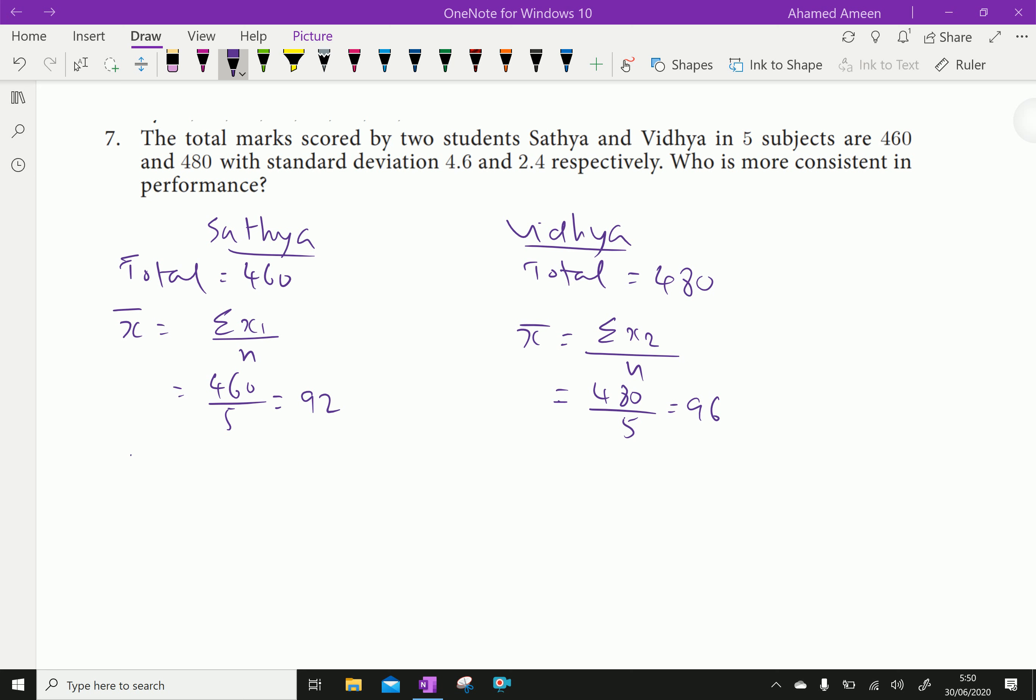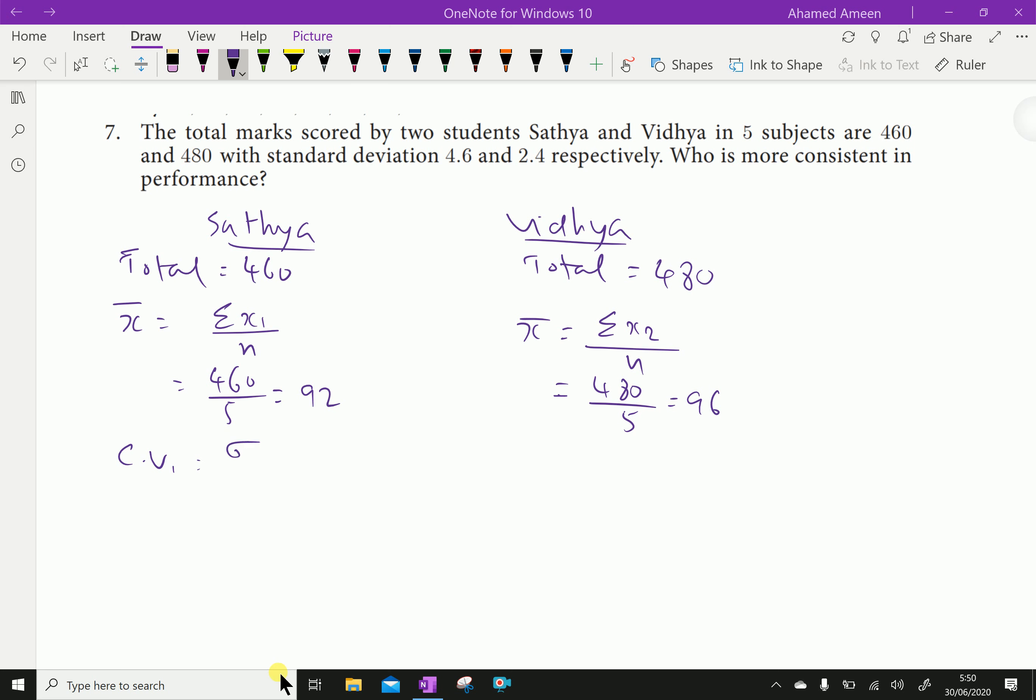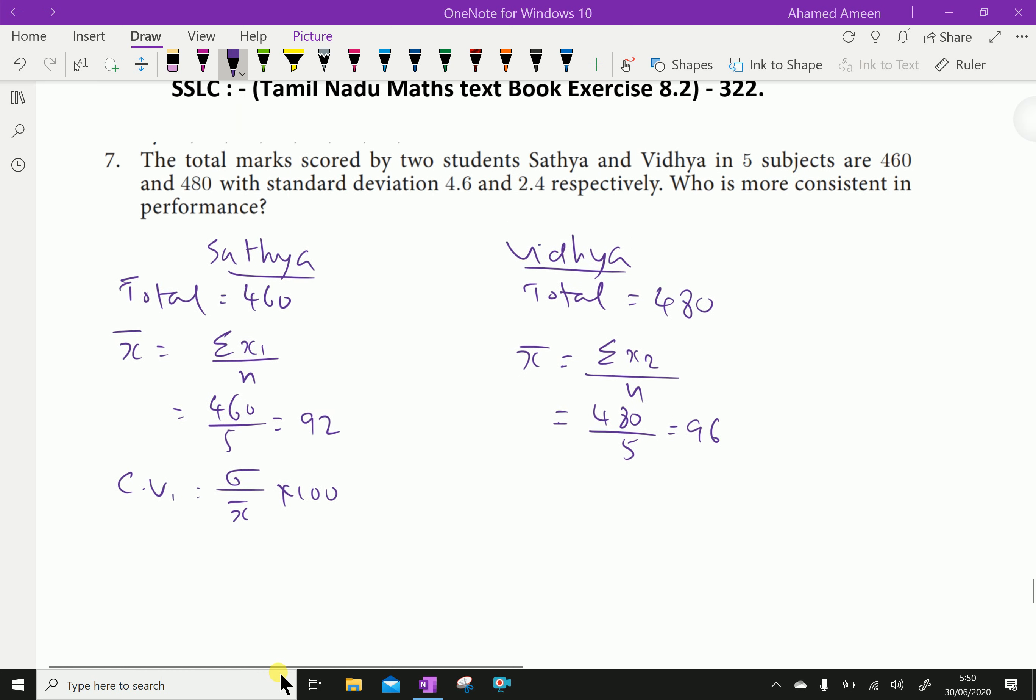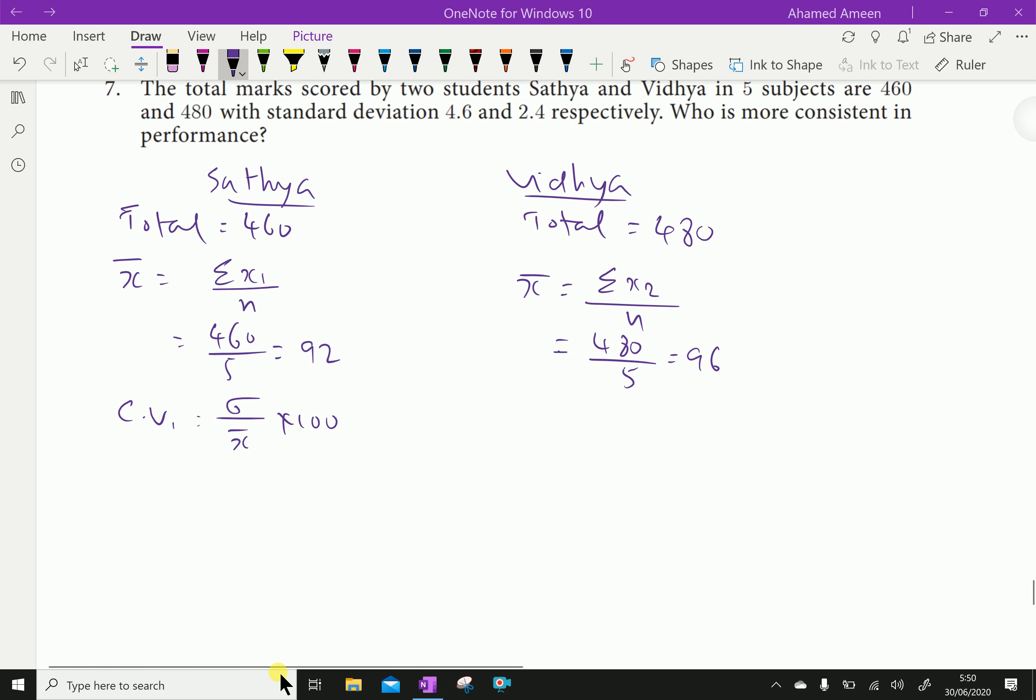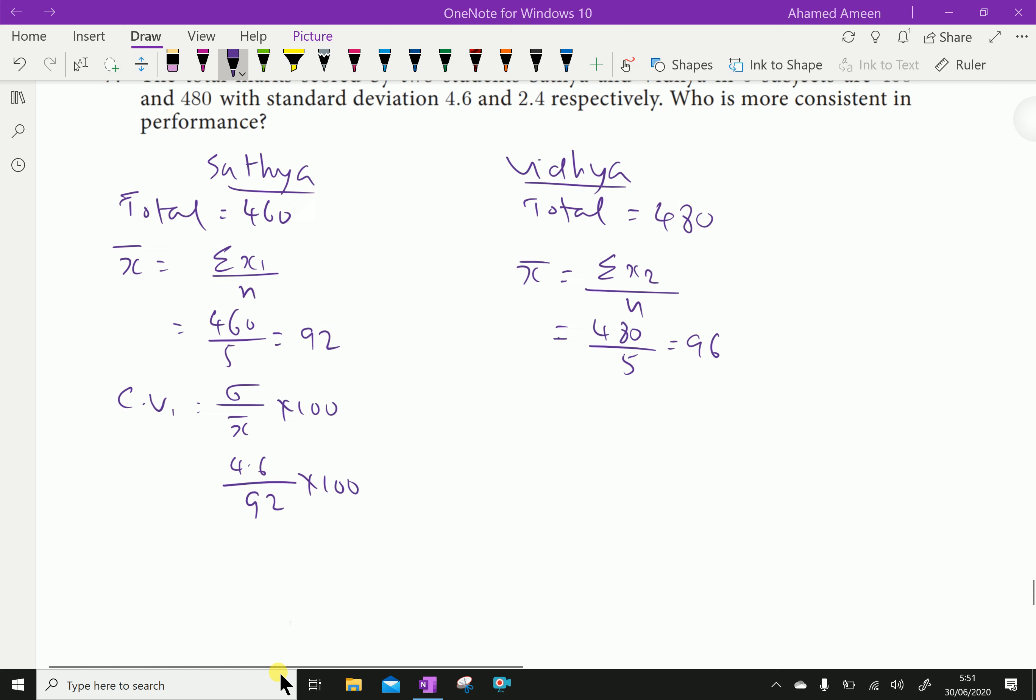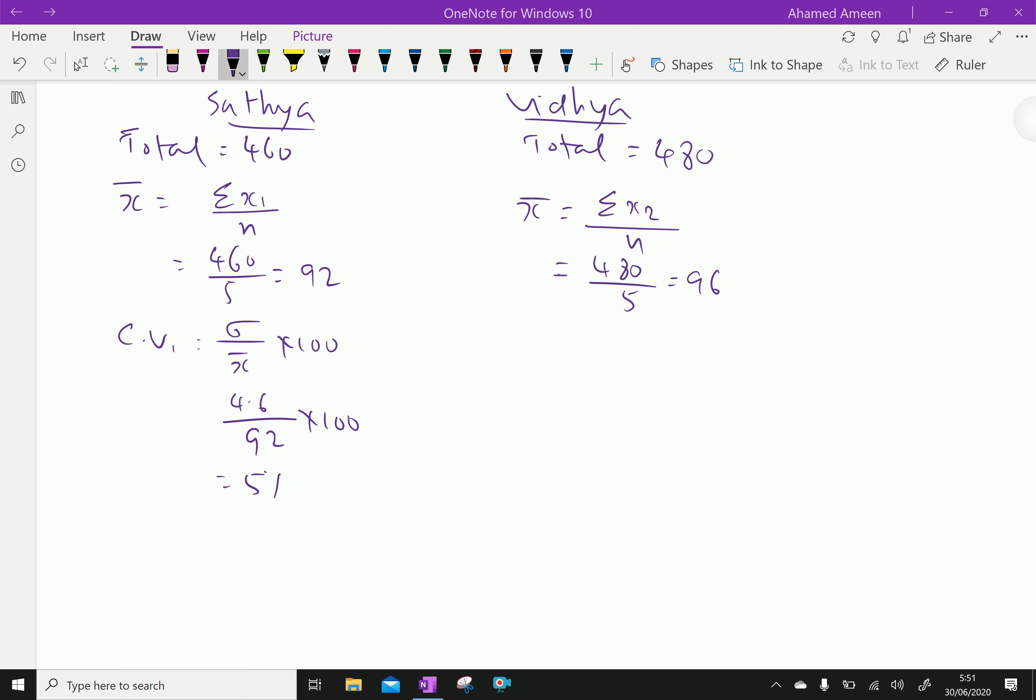Coefficient of variation for the first student Sathya is sigma over x bar into 100. Sigma is given for the first student as 4.6 over 92 into 100, which equals 5 percent.